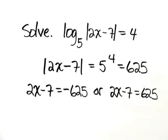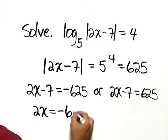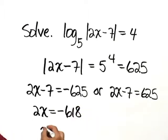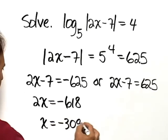Let's solve each of these equations separately. We would add 7 to both sides here. So that's going to give us that 2x is equal to negative 618. Divide both sides by 2, x will be equal to negative 309.